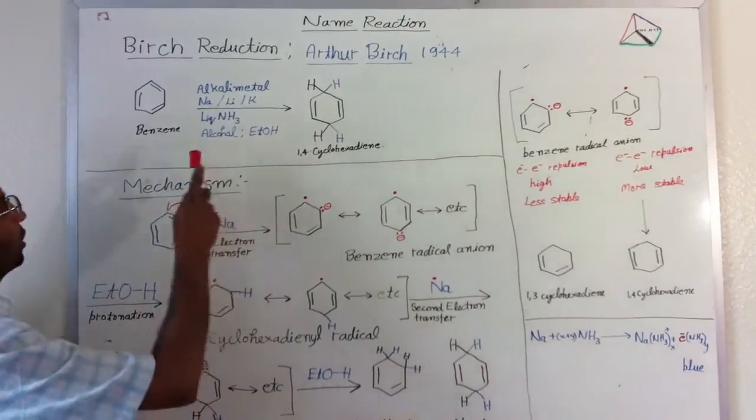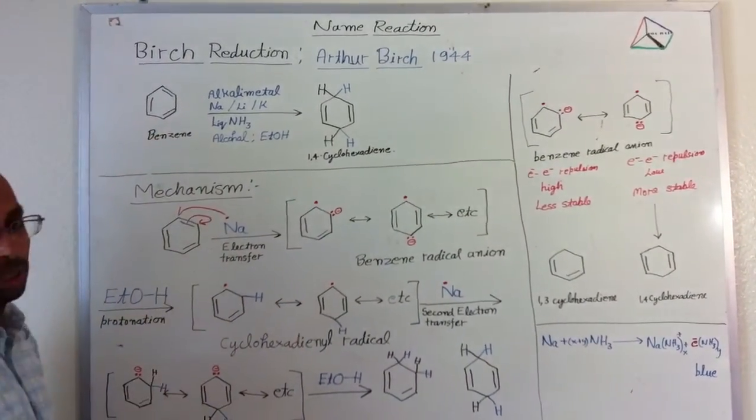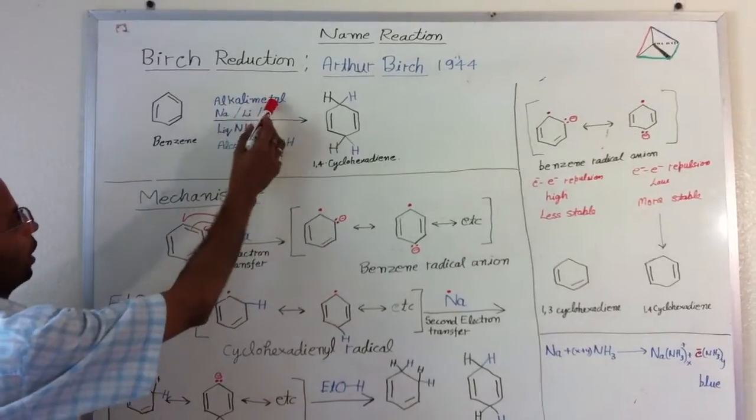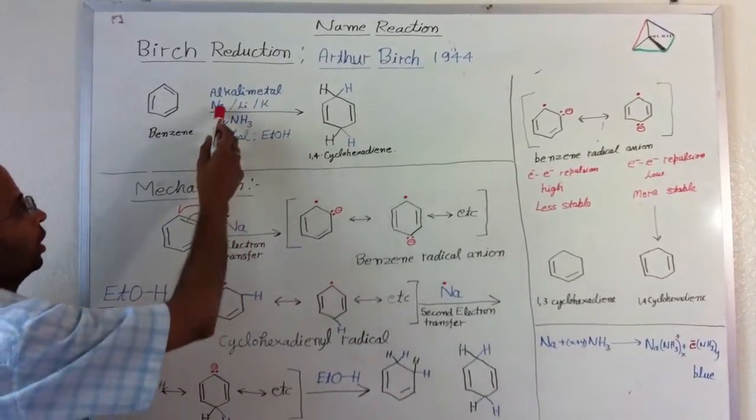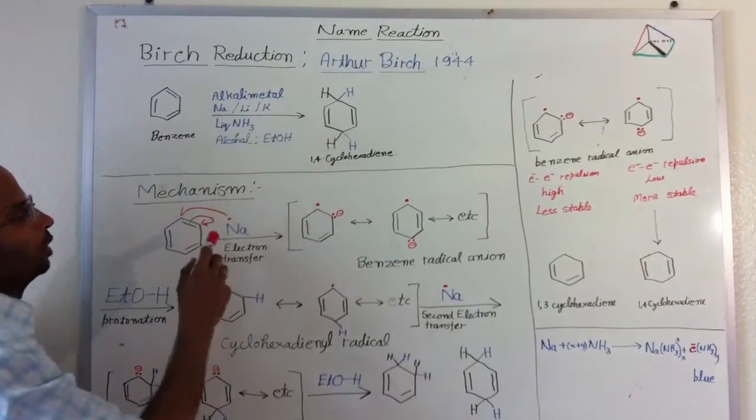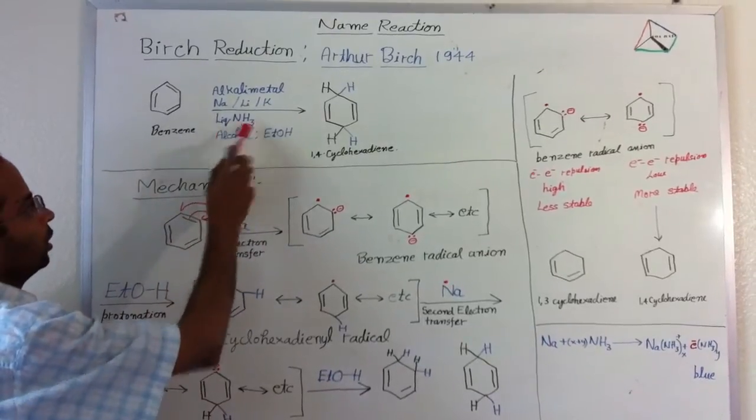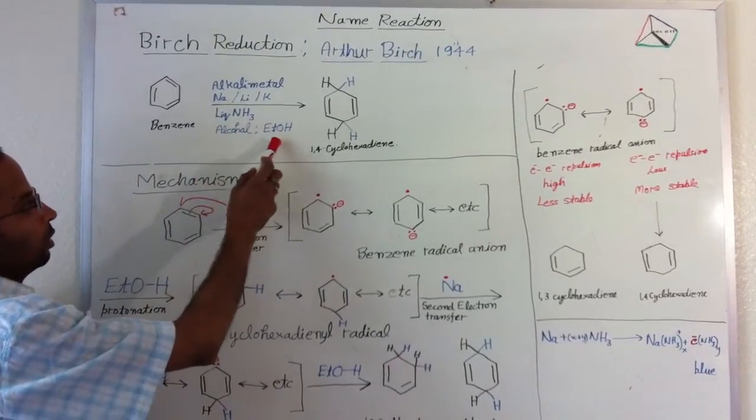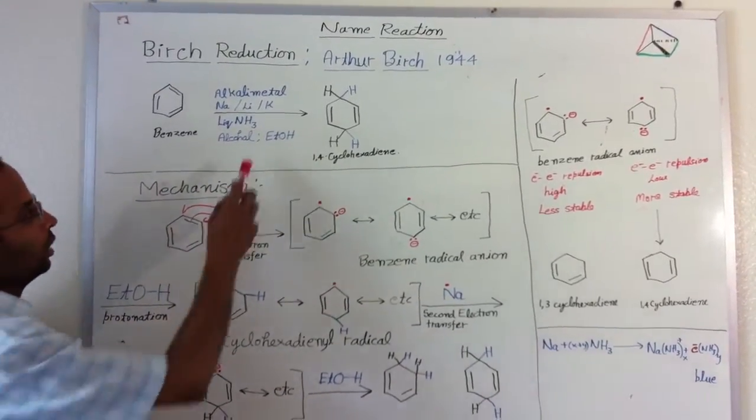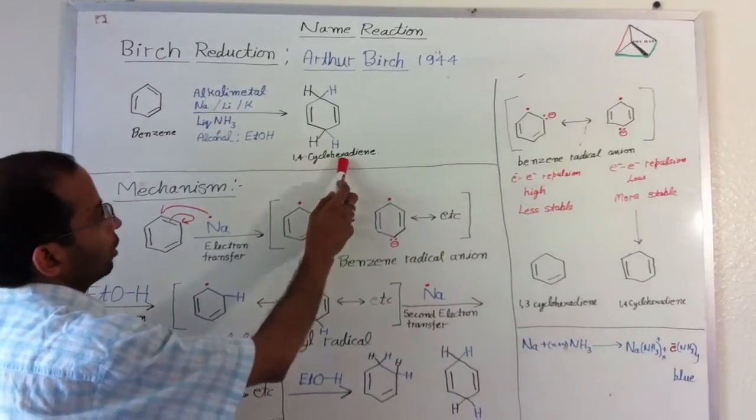According to this reaction, when benzene is treated in presence of alkali metals like sodium, lithium, or potassium, in presence of liquid ammonia and alcohol such as ethanol or butanol, it is converted into 1,4-cyclohexadiene.